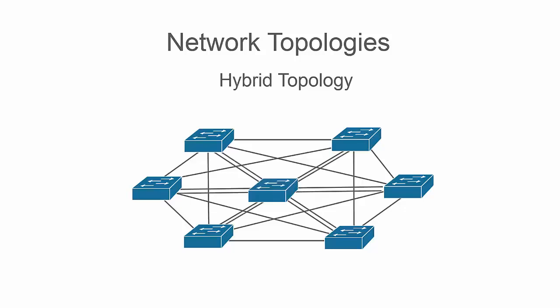A hybrid topology is created when different types of topologies are combined. For example, if you merged a star and mesh topology, then you would have a hybrid topology.